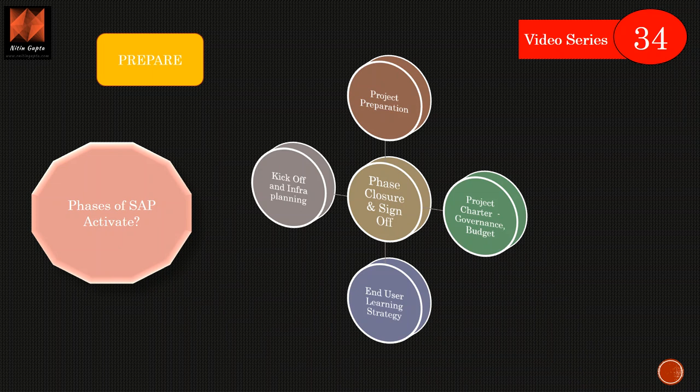Then after doing all these activities we come toward the phase closure and sign off. Basically here your project is approved, budget is approved, governance is set. How the decisions will be taken in the program, who will be approving what, how the structure looks like, how many directors, what is the team size, what are the areas, how do we divide. All those activities happen here. This is more of a planning exercise.